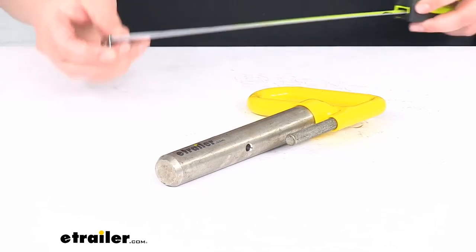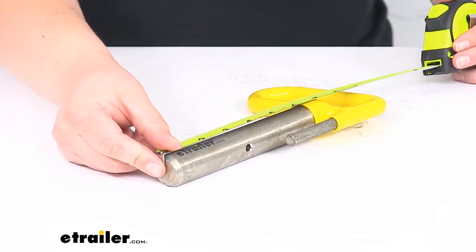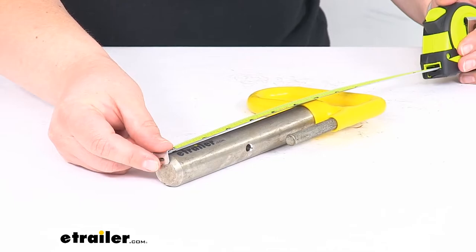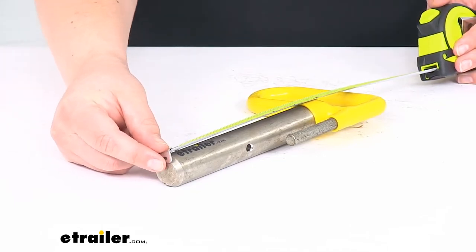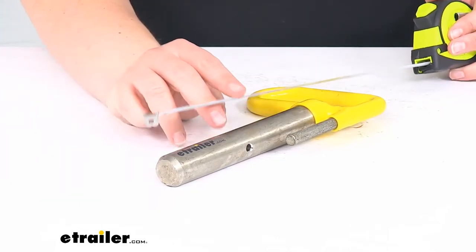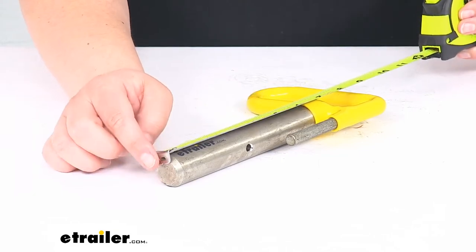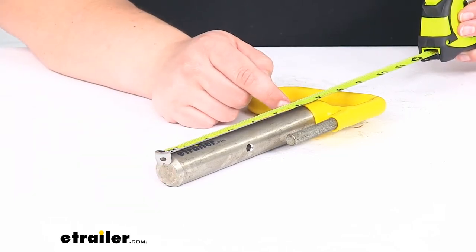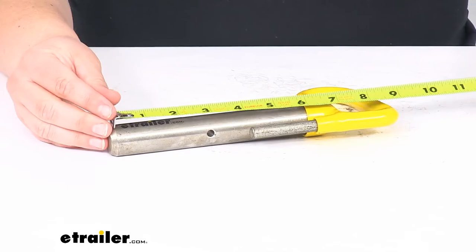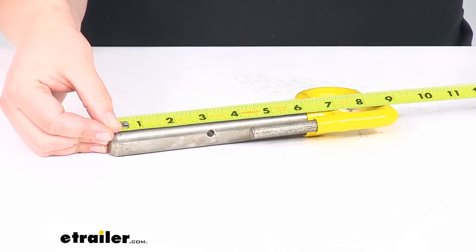As far as the overall size lengthwise, it's pretty much right at 9 inches long going from the very end to the top of the handle. Going from the bottom of the pin to where it meets that handle, it's about 6 inches.